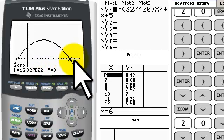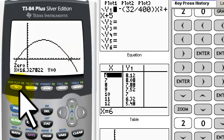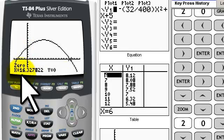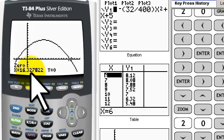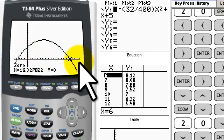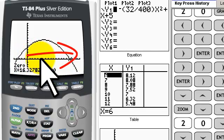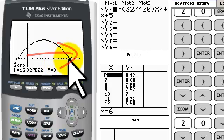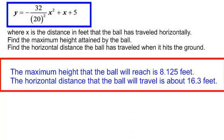So when my y is zero, y is my height. When the ball hits the ground, the ball has traveled 16.327-ish feet because my x was the distance that it has traveled horizontally. So the maximum height that the ball will reach is 8.125 feet. The horizontal distance that the ball will travel is about 16.3 feet.